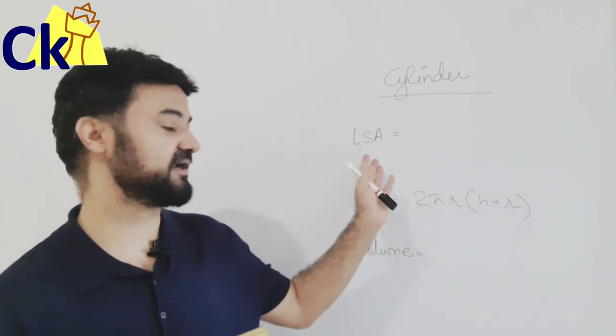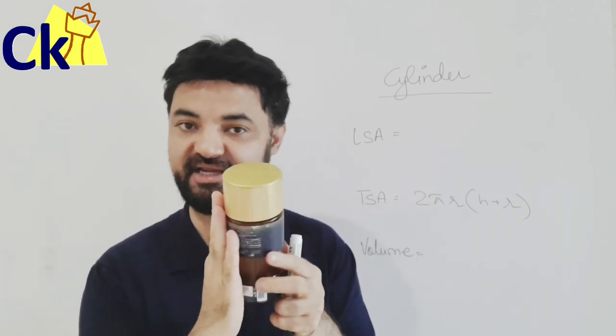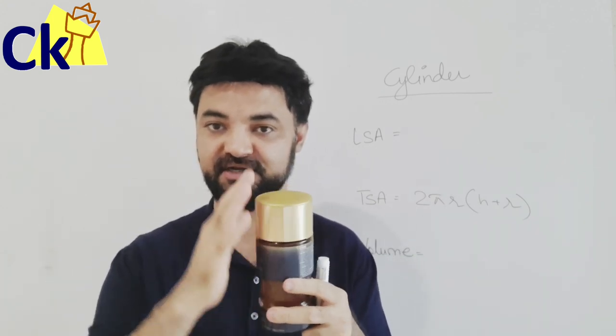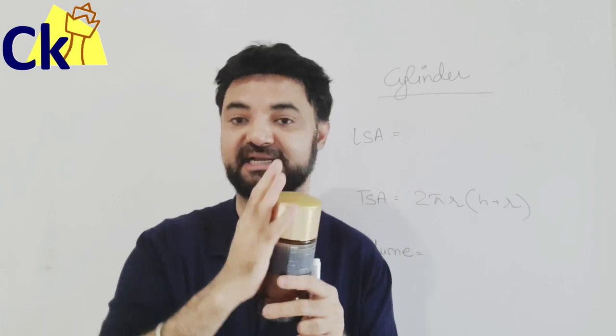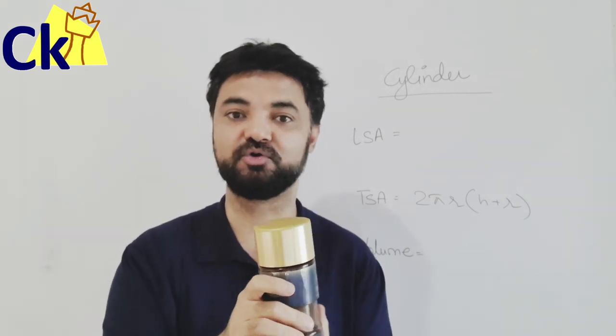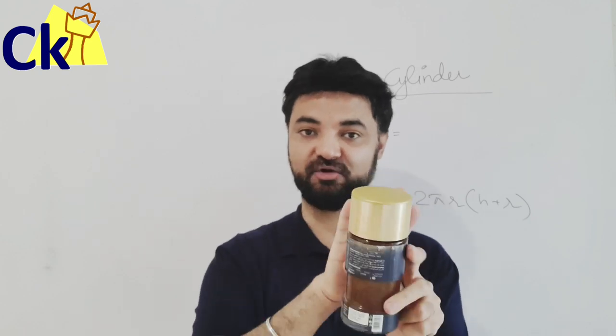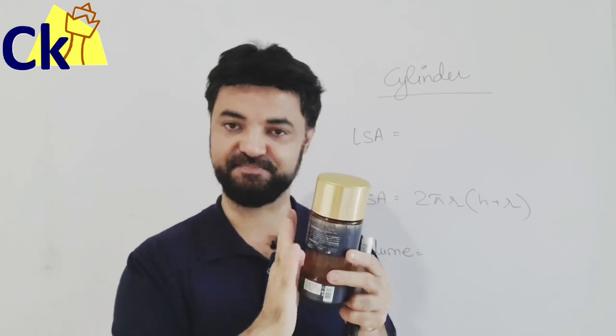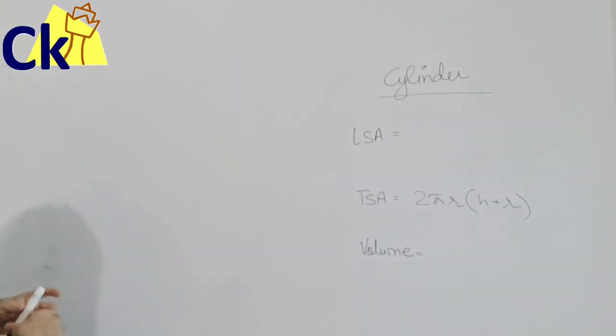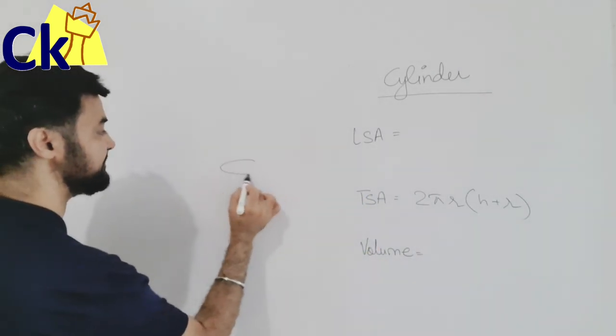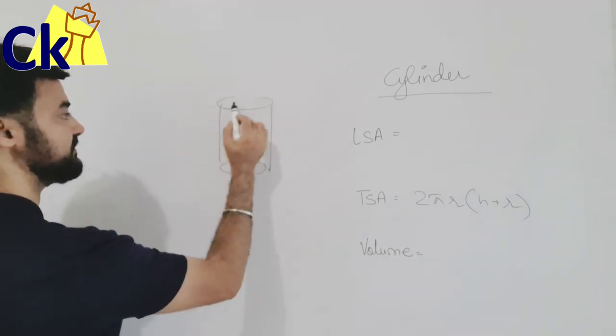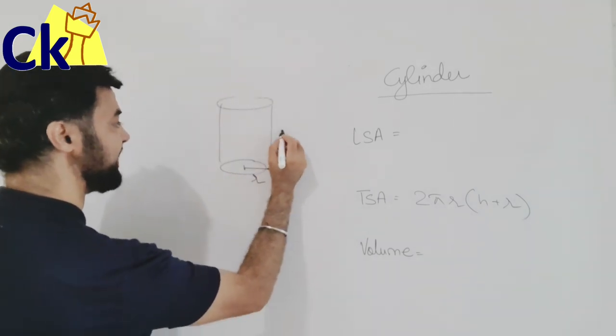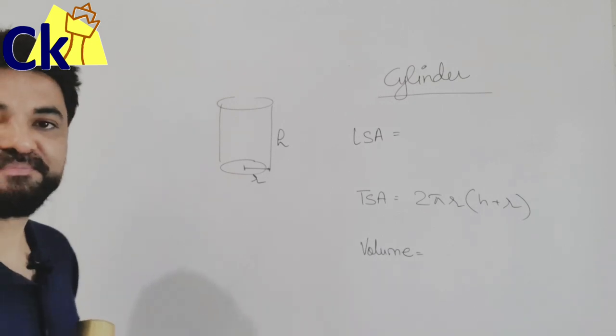First, let's understand what is lateral surface area or curved surface area. Everything around here is lateral surface area - no top, no bottom. Suppose I want to cover up a Pepsi can, the label will be coming across this place. This is curved surface area.